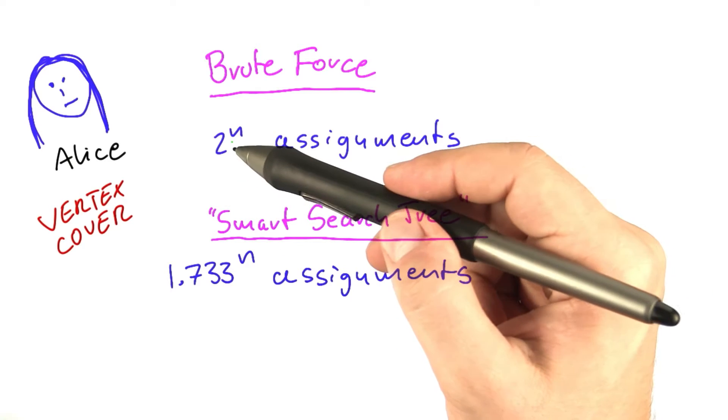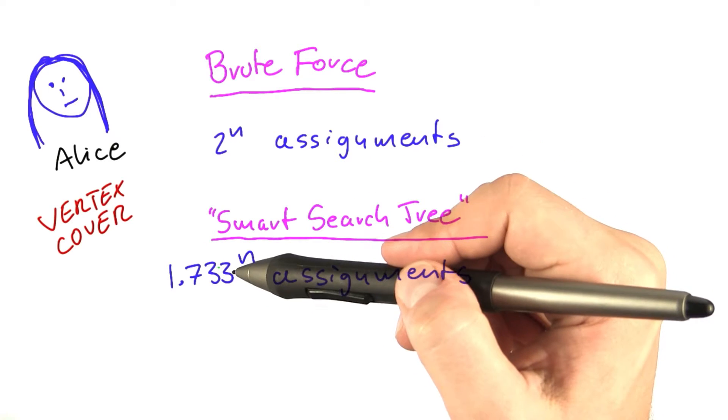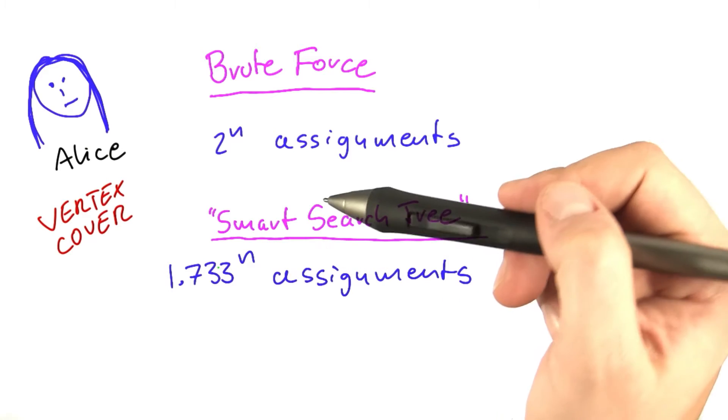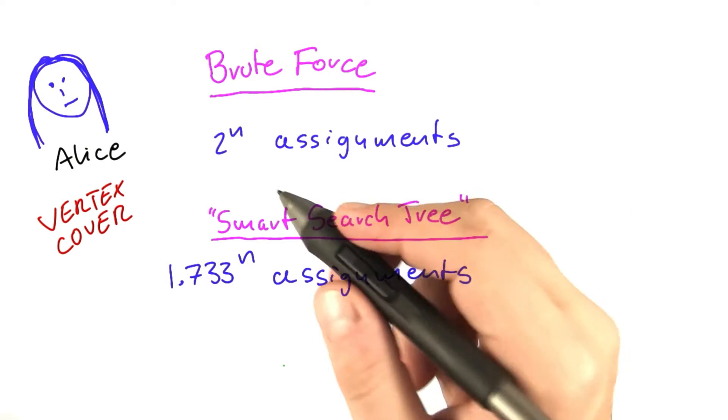Now, you might not be too impressed here. So 2 to the power of n, 1.733 to the power of n. Hmm, doesn't sound too good. But there's two things to keep in mind here.